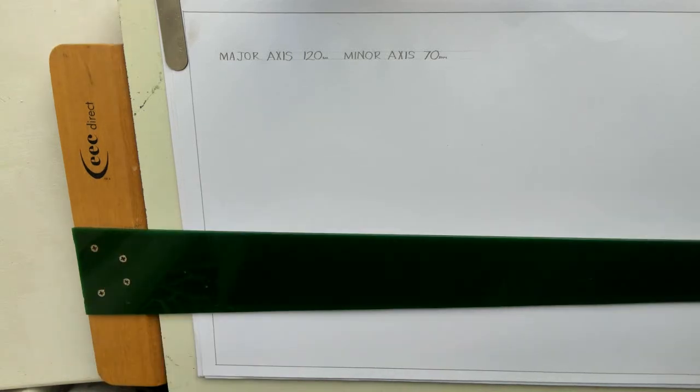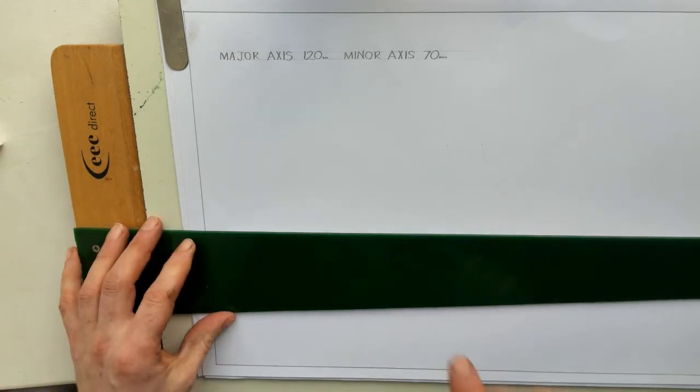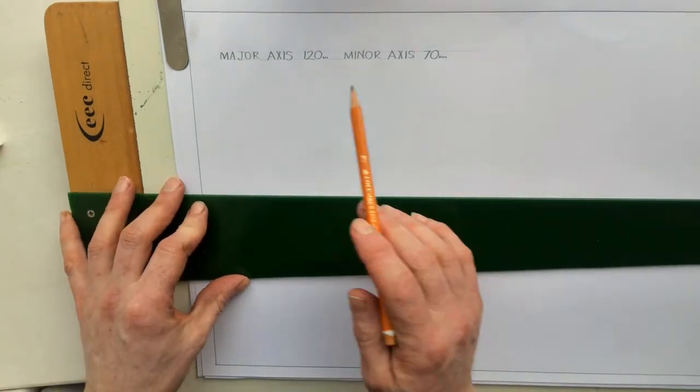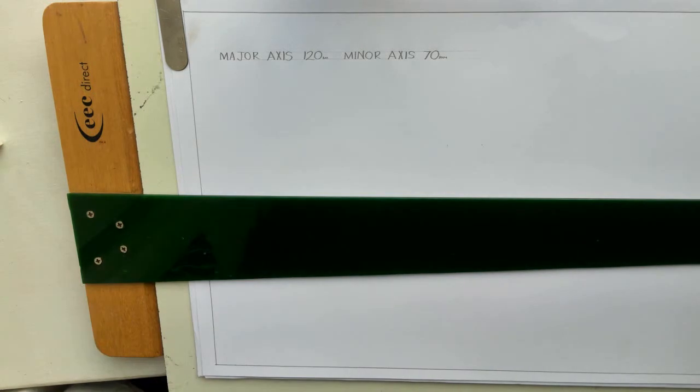So next we are going to go over some of the main principles on the ellipse and curve. To start off, we want to draw an ellipse giving a major axis of 120 and a minor axis of 70.